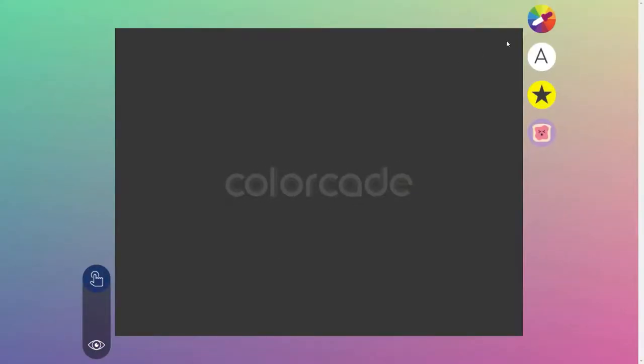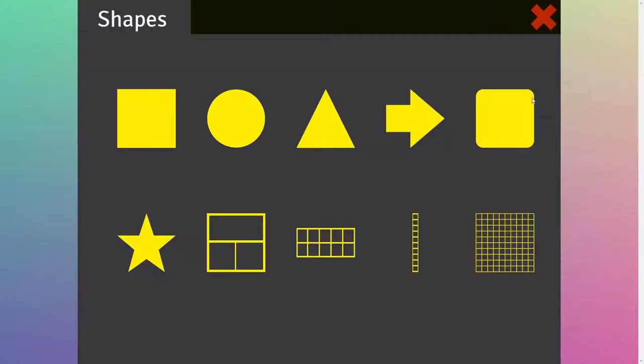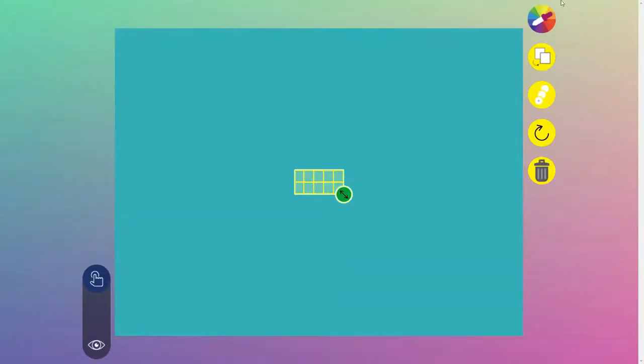First, we're going to change the background color, then we'll go over here and grab a 10 frame, two squares by five squares. Then make sure the color of said 10 frame is a different color than the background.